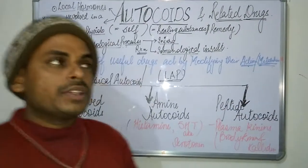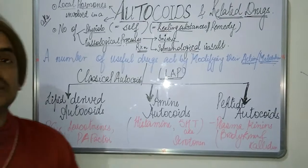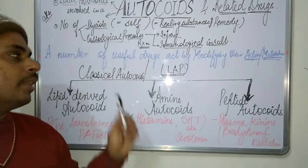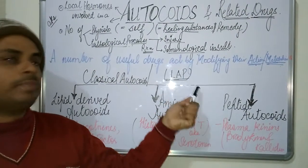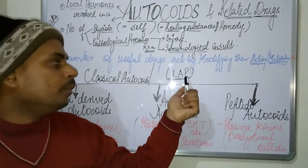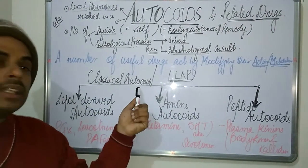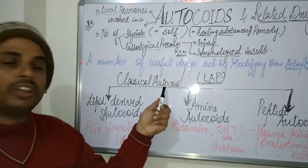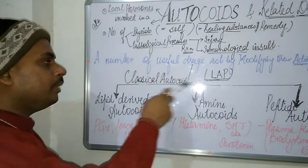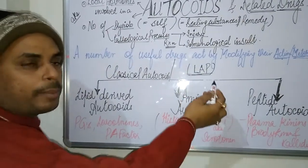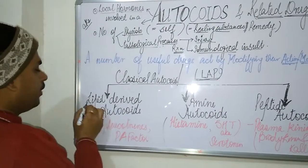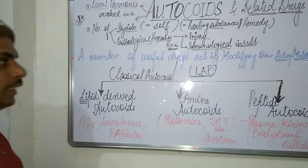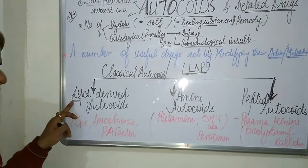Looking at the classical autocoid classification, the mnemonic or short trick I have made is the word LAP. If we just remember the word LAP, we can easily recall the classification of classical autocoids. The L of LAP refers to lipid-derived autocoids, A refers to amine autocoids, and P refers to peptide autocoids.